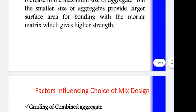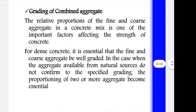The fourth factor is grading of combined aggregate. It is essential that fine and coarse aggregates are well graded. If aggregates available from natural sources do not conform to the specified grading, the proportioning of two or more aggregates becomes essential. You must confirm the size of aggregate specified as per IS code before using it in construction.